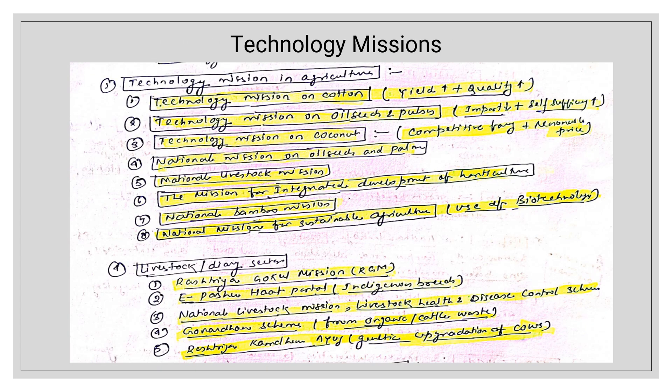Coming to Technology Missions in agriculture: there is the Technology Mission on Cotton — to increase yield and improve quality. Most technology missions have two goals: improve quality and improve yield, reduce imports and increase self-sufficiency. Other missions include: Technology Mission on Oilseeds and Pulses, Technology Mission on Coconut for competitive farming and reasonable prices, National Mission on Oilseeds and Oil Palm, National Livestock Mission, Mission for Integrated Development of Horticulture, National Bamboo Mission, and National Mission for Sustainable Agriculture using biotechnology. These missions can be directly cited when questions come on technology missions.